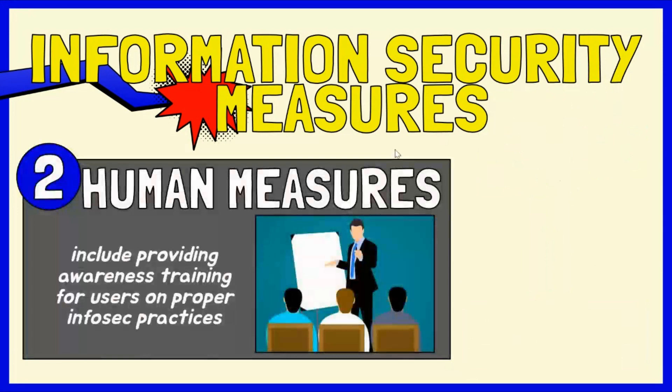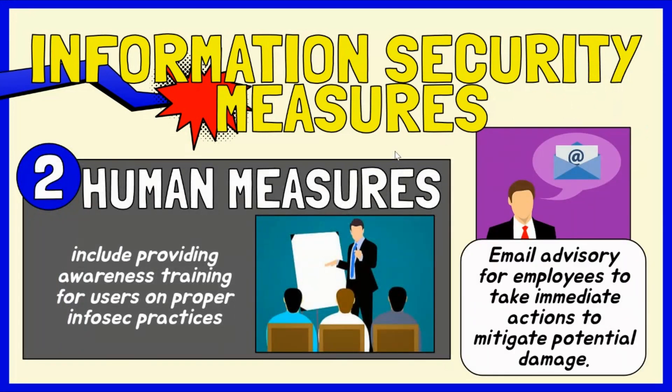Human users can also constitute vulnerabilities in an information system. For example, cybercriminals may manipulate users into sharing sensitive information through social engineering attacks like phishing. Human measures include providing awareness training for users on proper InfoSec practices.